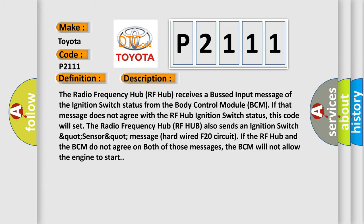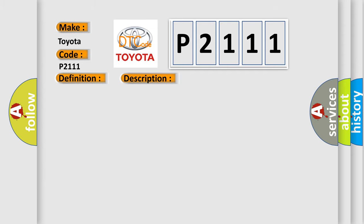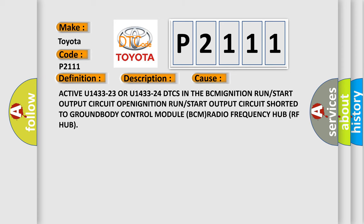This diagnostic error occurs most often in these cases: active U1433 23 or U1433 24 DTCs in the BCM, ignition run or start output circuit open, ignition run or start output circuit shorted to ground, body control module (BCM), or radio frequency hub (RF hub) faults.